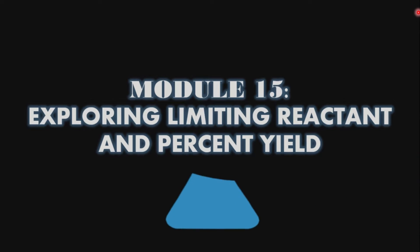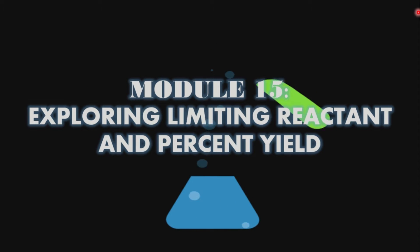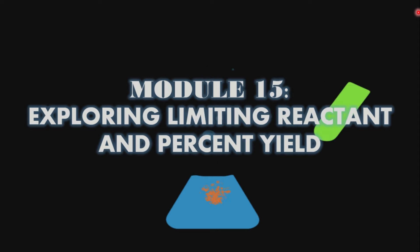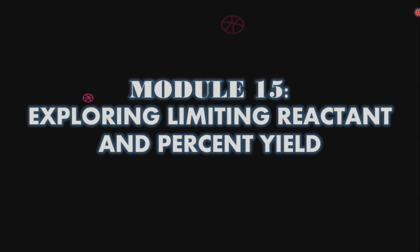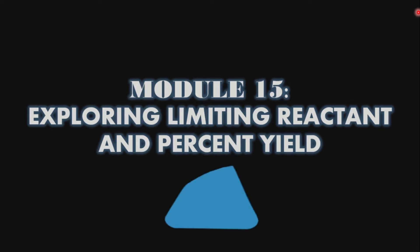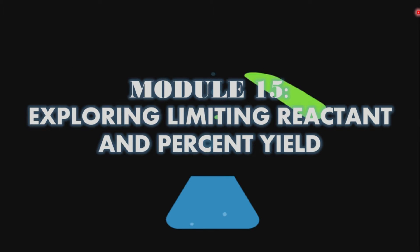Hello class, this is Sir Kenny, your teacher for the day, and welcome back to STM005 or General Chemistry 1. Today we will talk about Module 15, which is exploring limiting reactant and percent yield. Before we delve in, let us go to our objectives.